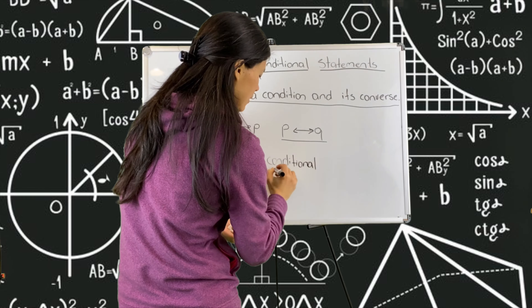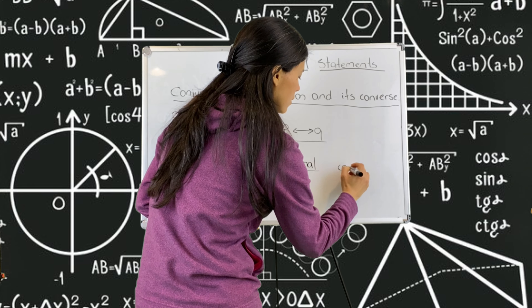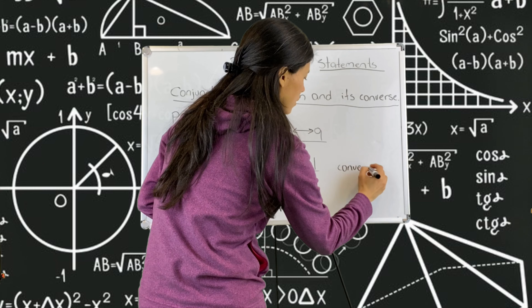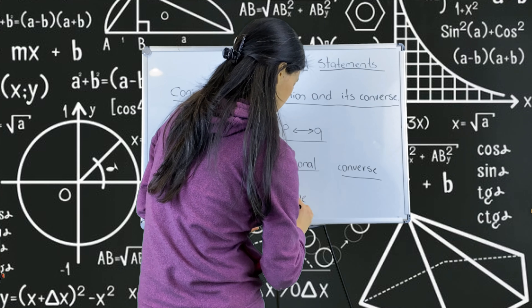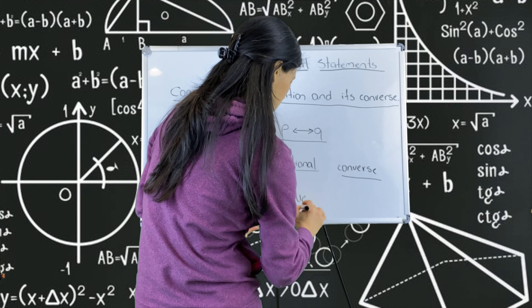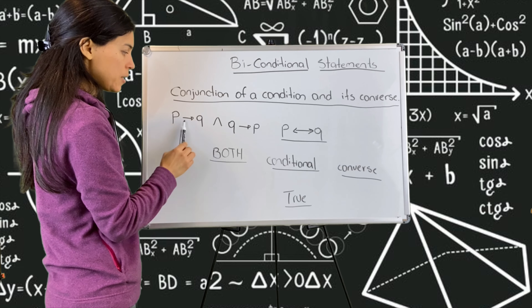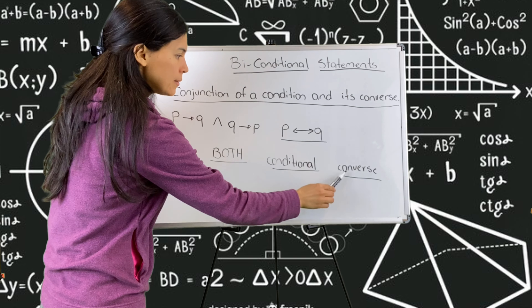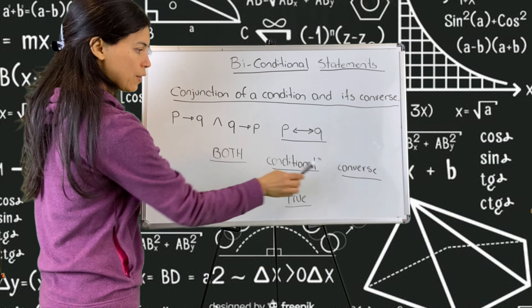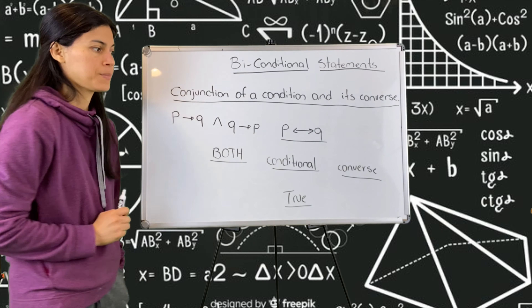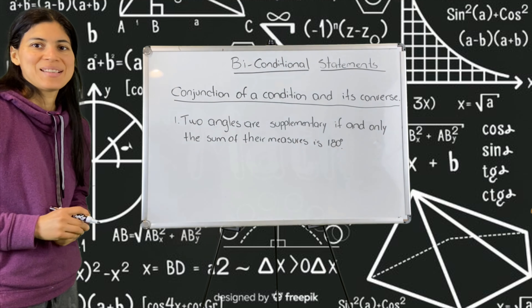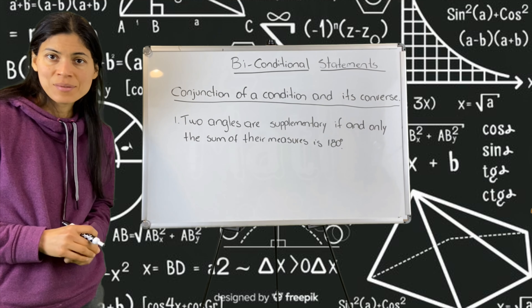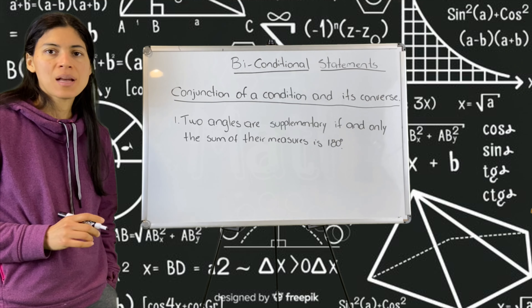Now the last part that you need to fill in: a biconditional statement is true when both — that's the word that goes there — when both the conditional and the converse are true.